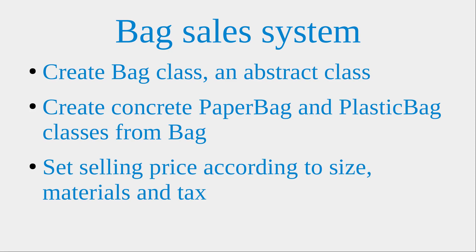My idea is like this. I would create a Bag class first, which is an abstract class. And then from this abstract class, I would create two concrete classes. One is PaperBag and the other one is PlasticBag. And then I would set up the selling price of each of the bag types according to the size, materials, and the tags.